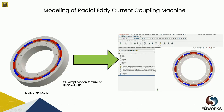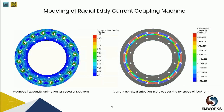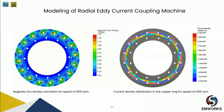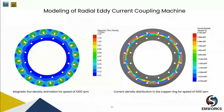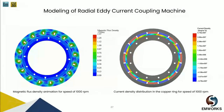The torque versus time is shown at different slip speeds. Varying the slip speed, the torque reaches a peak value of around 350 Newton-meters at 500 RPM. This is the animation of magnetic flux results for a speed of 1000 RPM, and the right graph shows the generated eddy currents on the conductive inner rotor — plots of both magnetic flux and eddy currents.